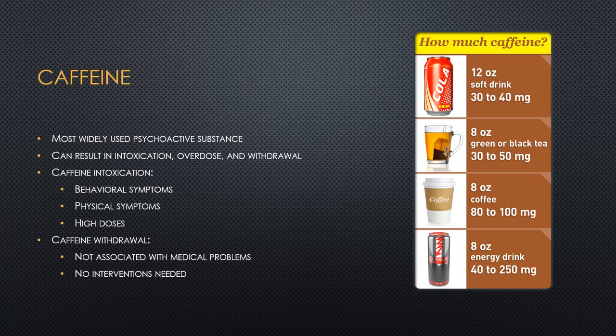Let's go through the clinical picture starting with caffeine. Caffeine is the most widely used psychoactive substance in the world. Individuals use caffeine because it increases alertness and decreases fatigue. It is an official use disorder, but it can still result in intoxication, overdose, and withdrawal. Caffeine intoxication usually occurs with greater than 250 milligrams of consumption — that's about two high-energy drinks.